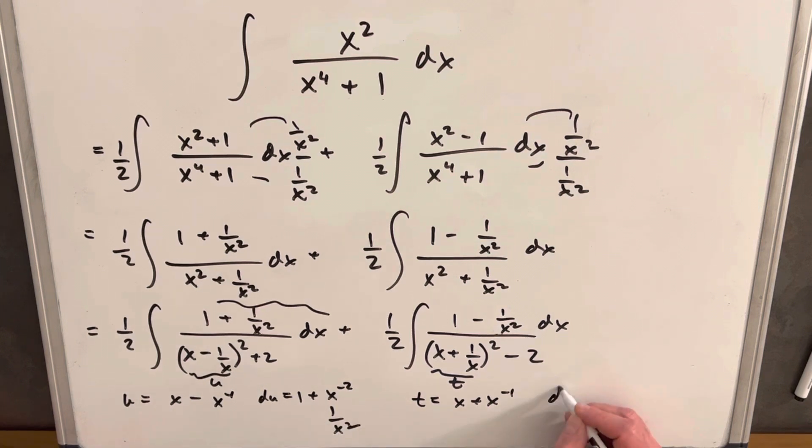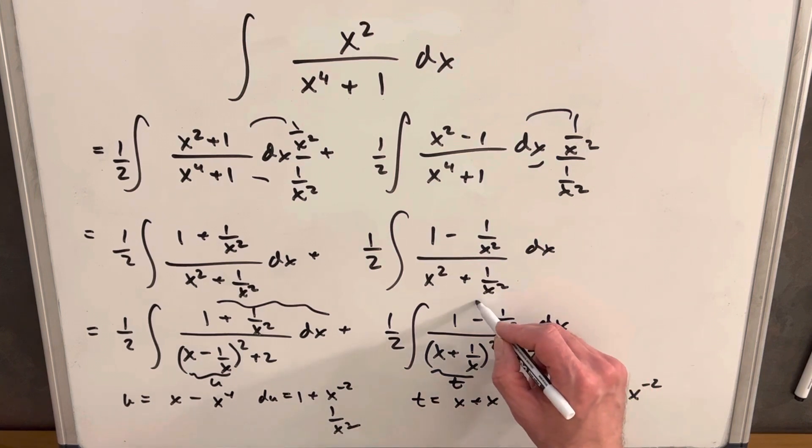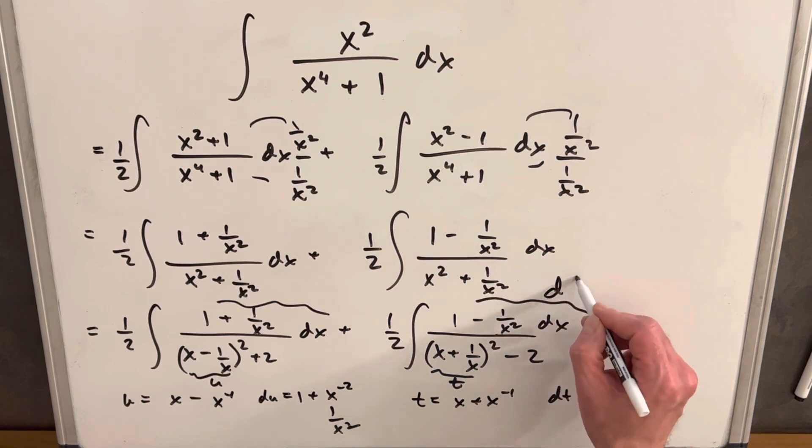And then here for our dt, derivative of x is 1. Derivative of x to the minus 1 is minus x to the minus 2. But again, we can write that as 1 over x squared. This is our dt right here.